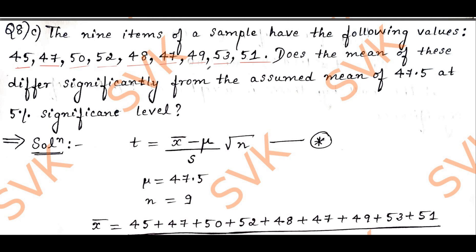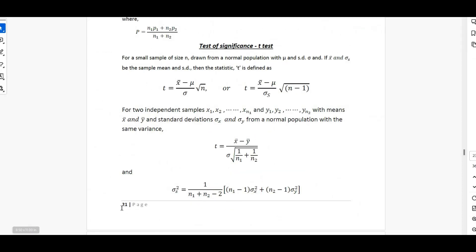This problem is on T distribution. The formula for T distribution is given by: T = (x̄ − μ) / (S × √n), where S represents the standard deviation of the small sample size. Sigma represents the standard deviation of the large population. In page number 21, you will find the test of significance for T test — we use S instead of Sigma.